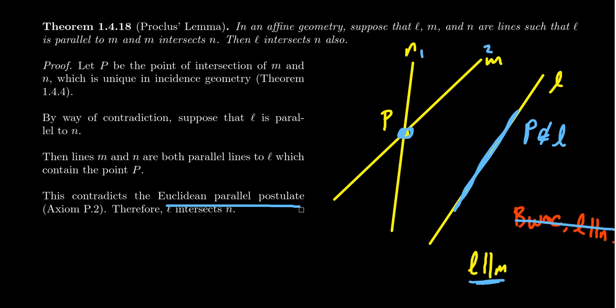The contradiction means we must get the opposite of what we assumed. So we get that L is not parallel to N, which means L and N intersect each other. This theorem follows really just from the Euclidean parallel postulate. While we do have uniqueness of intersection, we never actually needed that.